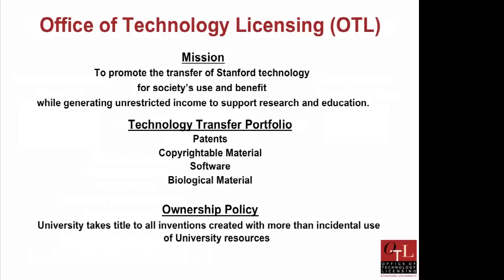The main type of intellectual property we deal with is patents, but we also handle other types of IP such as copyrightable material — in particular software, but also educational works and similar materials. We also do a lot of licensing of biological material, which often includes cell lines, monoclonal antibodies, and knockout mice.